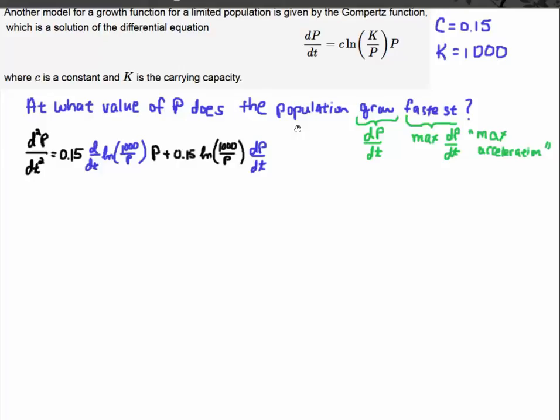Now when I do that, remember I'm using c is 0.15 and k is 1,000. When I do that, I take the derivative of the natural log term here, k over p, where k is 1,000, and I leave the p alone, I leave this p alone, plus the 0.15, which is what I'm using for c, times the natural log left alone, times the derivative of p with respect to t.